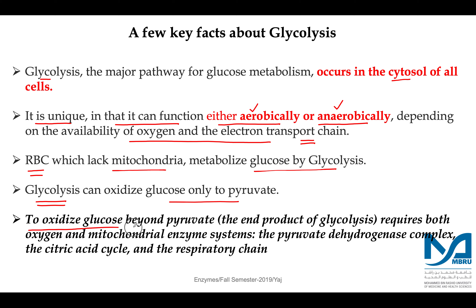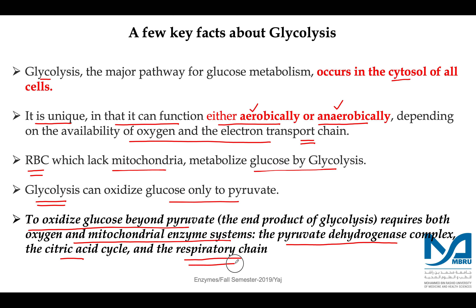To oxidize glucose beyond pyruvate aerobically, both oxygen and the mitochondrial enzyme systems are required, particularly the pyruvate dehydrogenase complex, which we will cover during the TCA cycle or Krebs cycle, also known as the citric acid cycle. In the citric acid cycle, pyruvate is metabolized to carbon dioxide and water, generating high-energy electron carriers which, via the respiratory chain or electron transport chain, lead to ATP generation. These concepts of aerobic and anaerobic glucose metabolism should be clear before studying the steps of glycolysis.